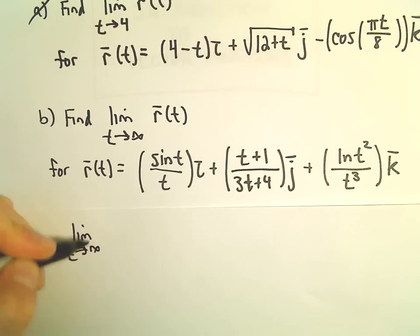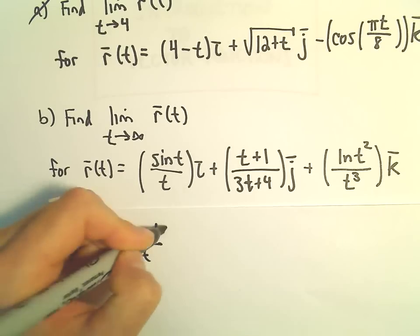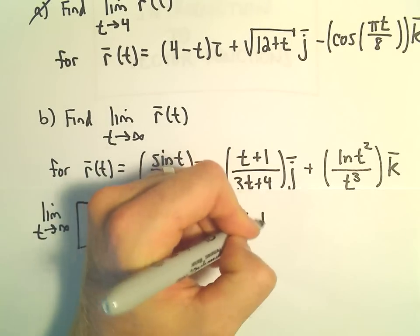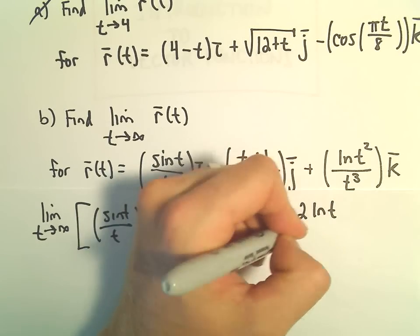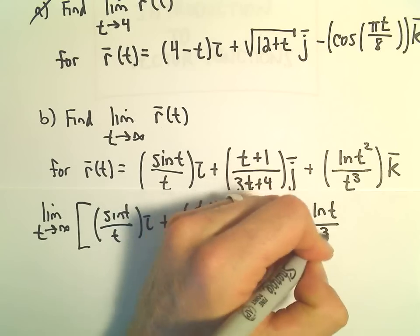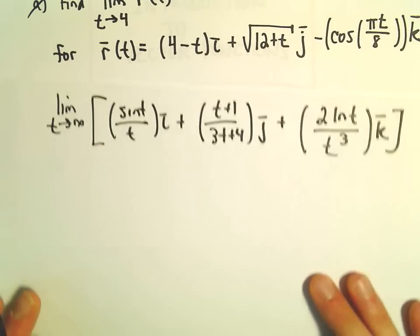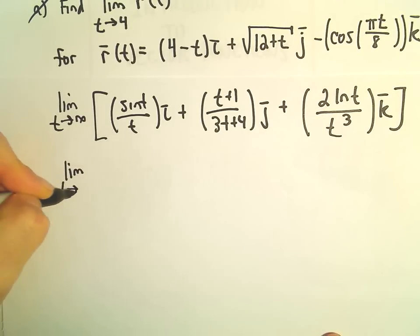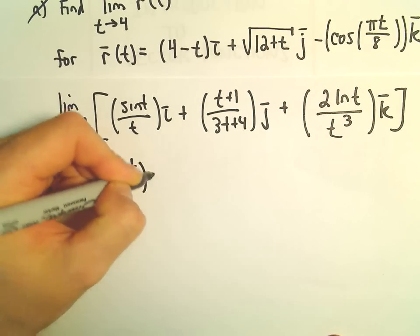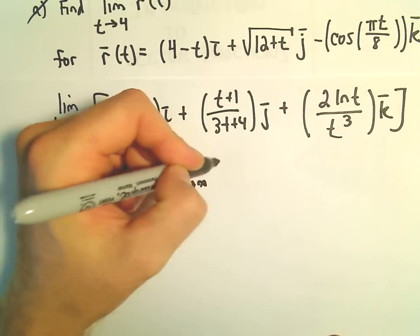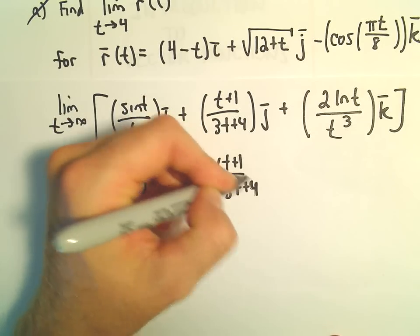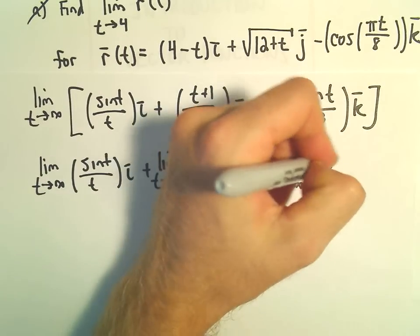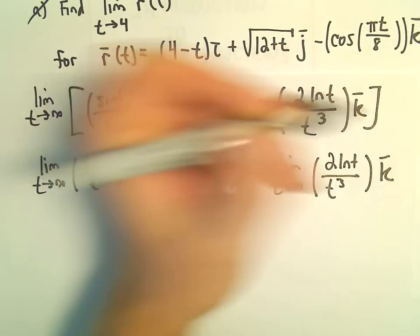We'll take the limit as t goes to infinity. We've got sine t over t times i, plus t plus 1 over 3t plus 4 times j, plus — rewriting this, we can pull that 2 out — 2 times the natural logarithm of t over t cubed times k. What we're going to do is look at the limit as t goes to infinity of each one of these components separately.